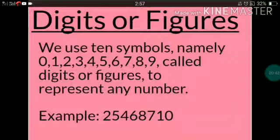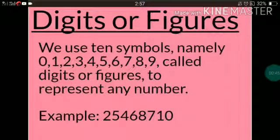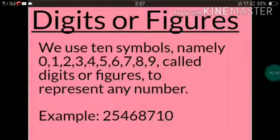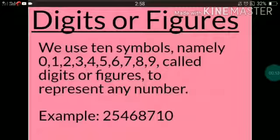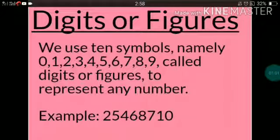Digits or figures: We use 10 symbols — 0, 1, 2, 3, 4, 5, 6, 7, 8, 9. These symbols are called digits or figures. By using these symbols, we can represent any number.